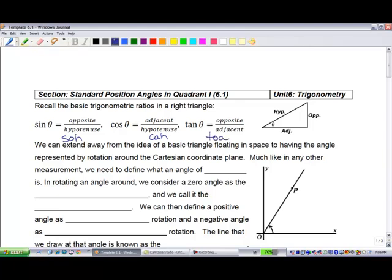We can extend away from the idea of a basic triangle floating in space to having the angle represented by rotation around the Cartesian coordinate plane. We're going to anchor it as rotation. Much like in any other measurement, we need to define what an angle of zero is. We call that the initial arm.